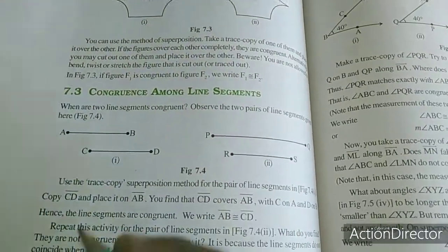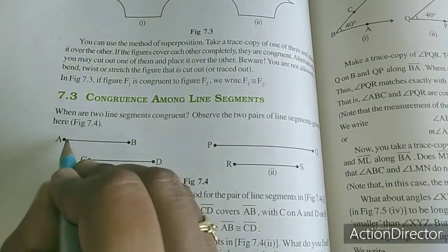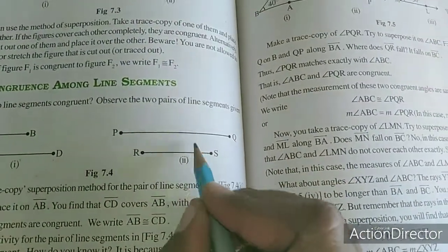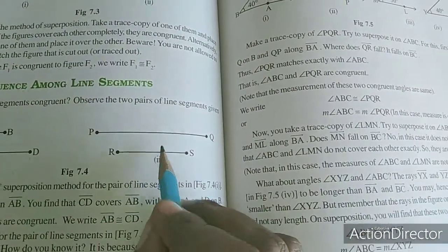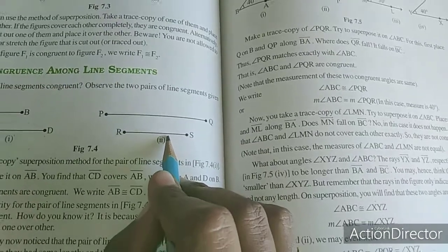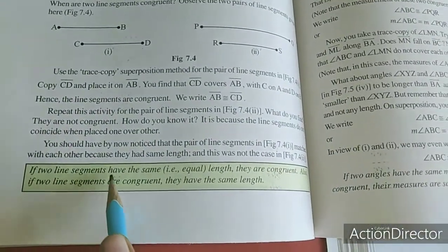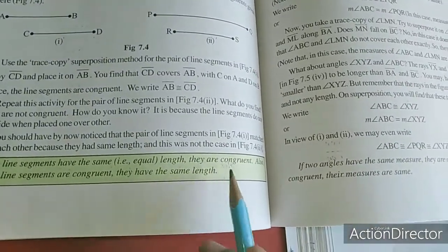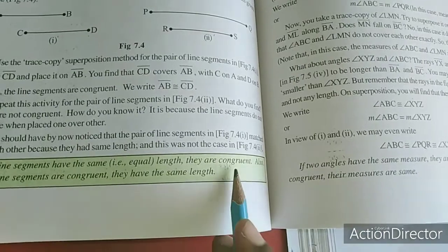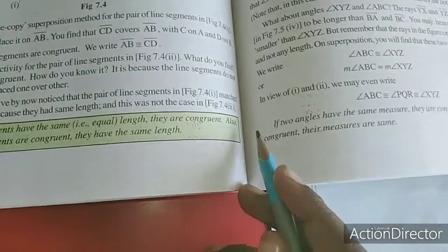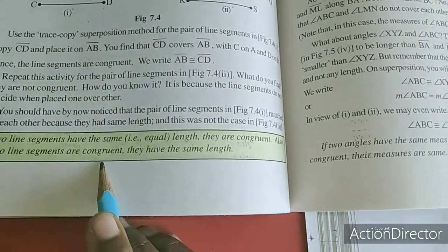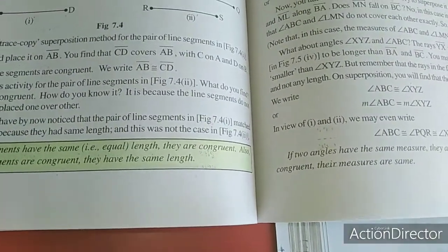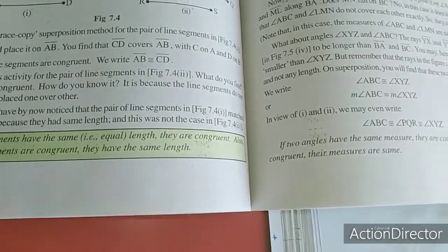Now congruence among line segments. If these two lines have equal length, we say they are congruent. So if two line segments are congruent, they have the same length. Same length is congruent. Congruent line segments are same length.